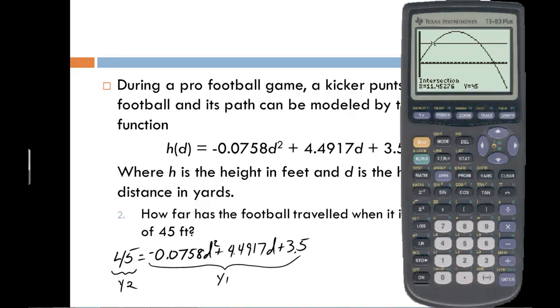Now see if you can find the second intersection. Again we go into the calc menu. We select number 5 to do the intersection. We enter the first curve and the second curve, so just hit enter twice. This time for the guess, I want it to be closer to the right one, so I'm going to use the arrow keys. And we'll move it over here, and I'll press enter to use the guess. So this time, the ball will be 45 feet high after it has traveled 47.8 yards.